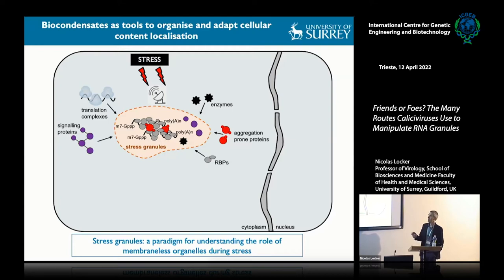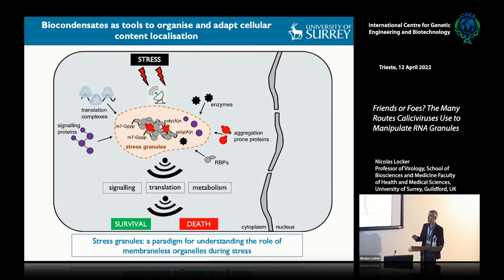These are also called biocondensates, where all kinds of enzymes, aggregation-prone proteins, RNA binding proteins, signaling molecules, or translation complexes can accumulate. This accumulation can control many fundamental processes such as signaling, metabolism, and translation, impacting on the outcome of the stress—leading potentially to survival or death of the cells. Stress granules are a superb paradigm for understanding the role of membrane-less organelles during stress.